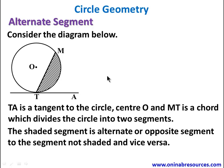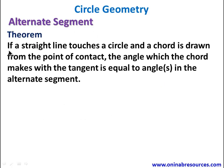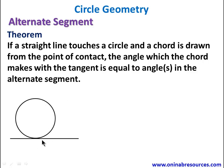We'll now look at the related theorem. Theorem: if a straight line touches a circle and a chord is drawn from the point of contact, the angle which the chord makes with the tangent is equal to the angle in the alternate segment. So we have a straight line touching the circle, and a chord is drawn from the point of contact.